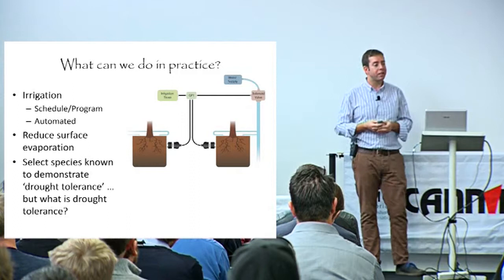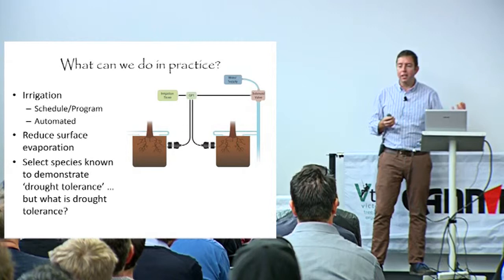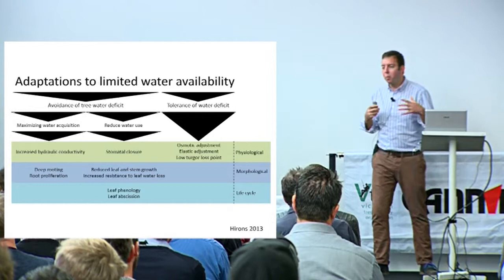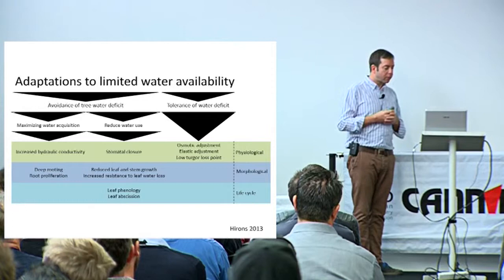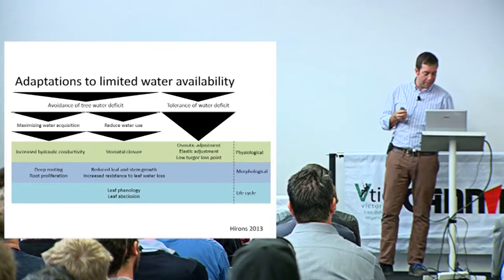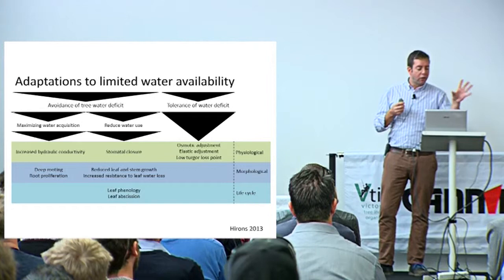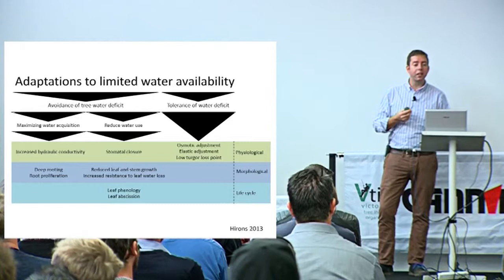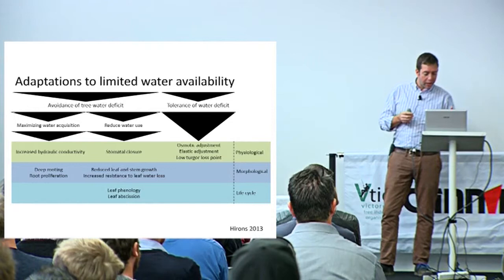We can reduce surface evaporation - mulching is a great way to do that. We can also select species that demonstrate particular drought tolerance. There are two principal ways trees deal with drought: they either avoid tree water deficit or they tolerate tree water deficit. This is based on a scheme Levitt put together in the 70s. We can either avoid water deficit by maximizing acquisition - deep rooting, for example - or reducing the amount of water used through the system, broken down into physiological, morphological, and life cycle components.